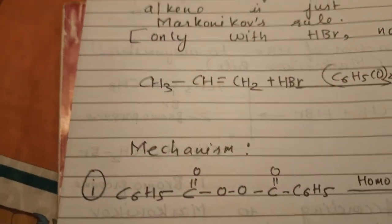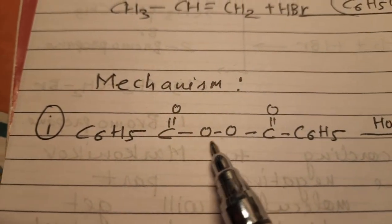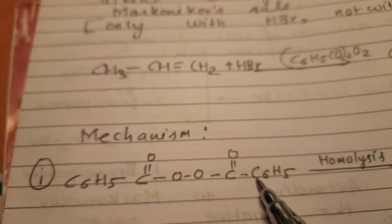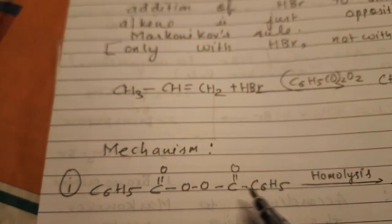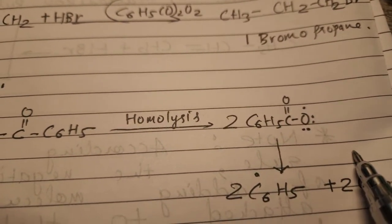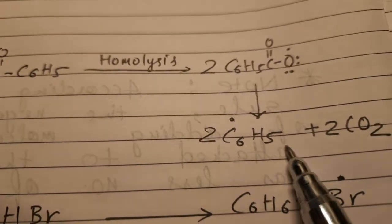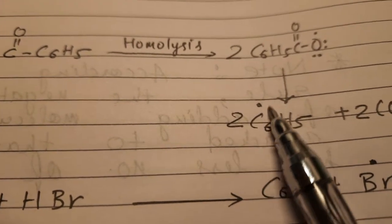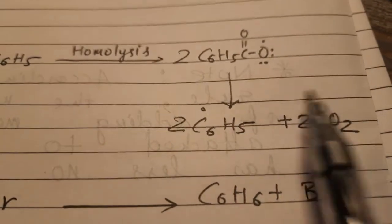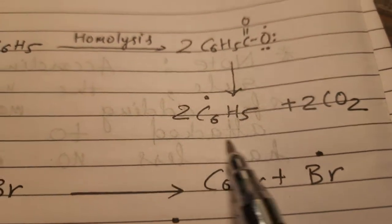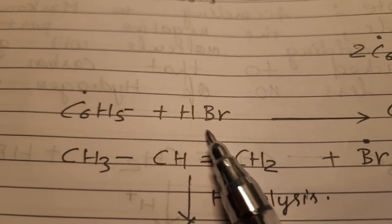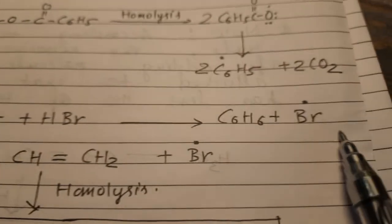Now the mechanism: benzoyl peroxide (C6H5-COO)2 undergoes homolysis — it splits equally. First, it gives two C6H5-COO• radicals. These further break down: C6H5• free radicals are released along with two CO2 molecules. The C6H5• free radical, being incomplete, is reactive. It then reacts with HBr, forming C6H6 (benzene) and a Br• free radical.